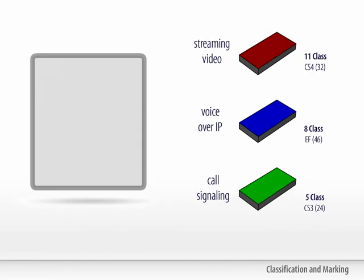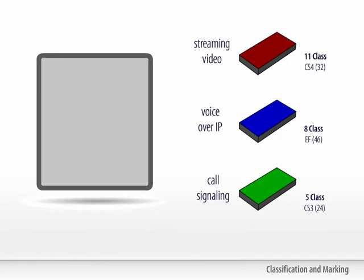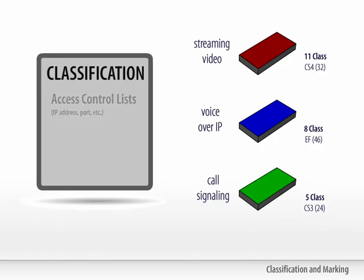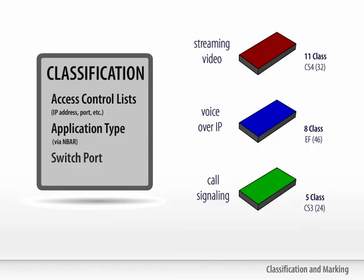There are three commonly used classification methods: access control lists such as IP address, port, etc., application type via NBAR, and switch port.